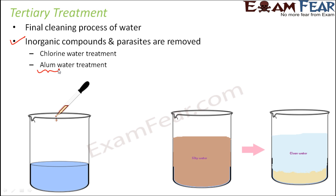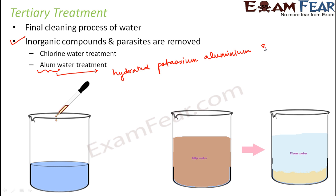What is alum? Alum is a chemical substance — chemically it is hydrated potassium aluminum sulfate. This is alum. Alum has the ability to remove phosphorus particles. So let's say this is silty water, this is muddy water.